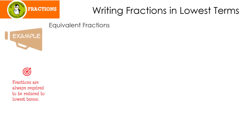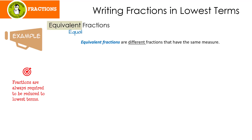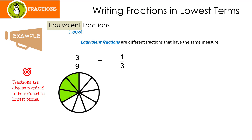Let's talk about equivalent fractions for a minute. Equivalent means equal. Equivalent fractions are different fractions that have the same measure. 3 ninths equals 1 third — even though we reduced it, they still have the same measure.